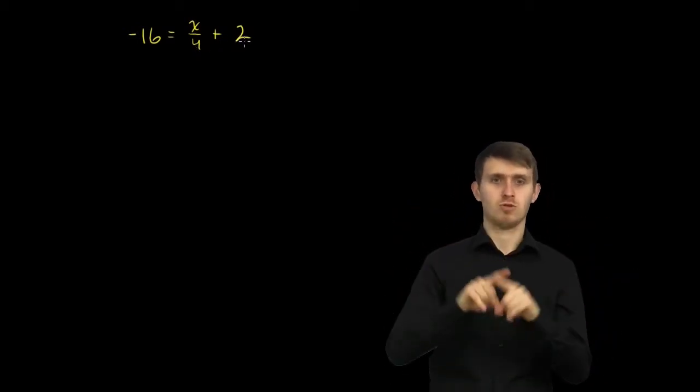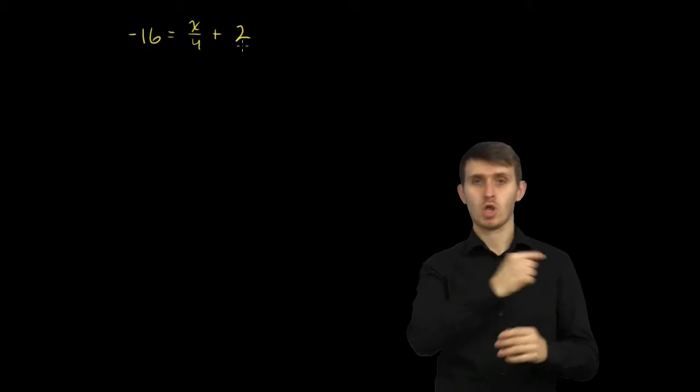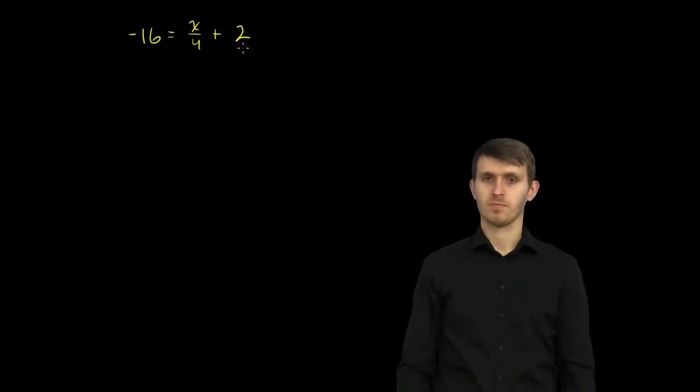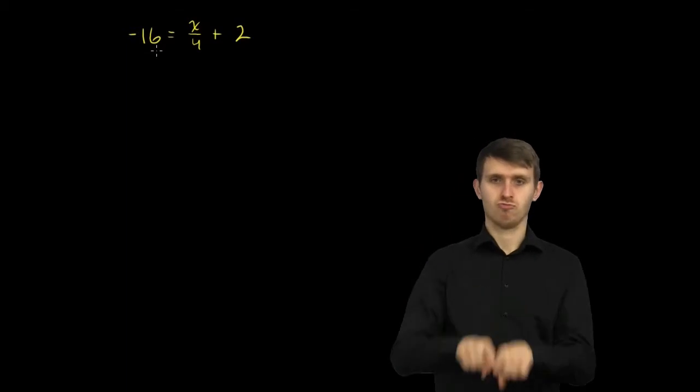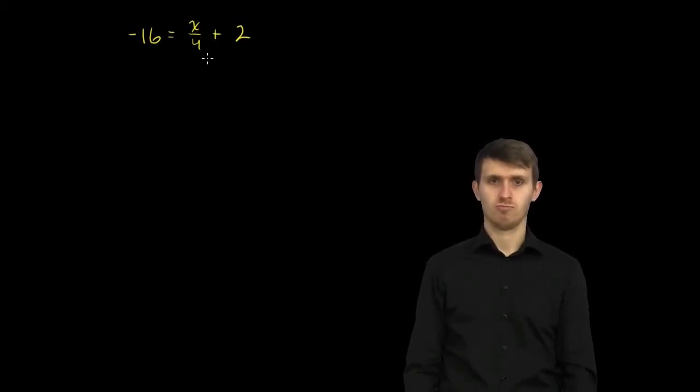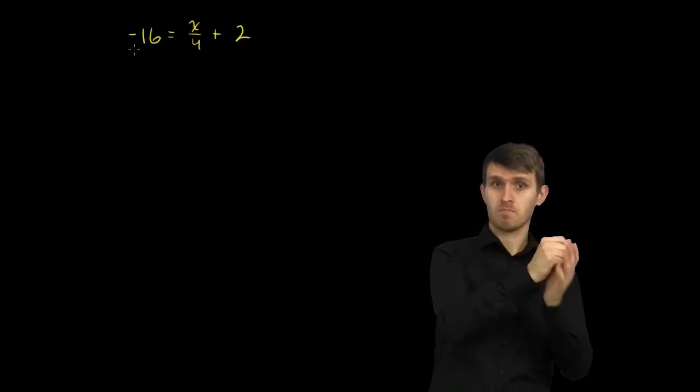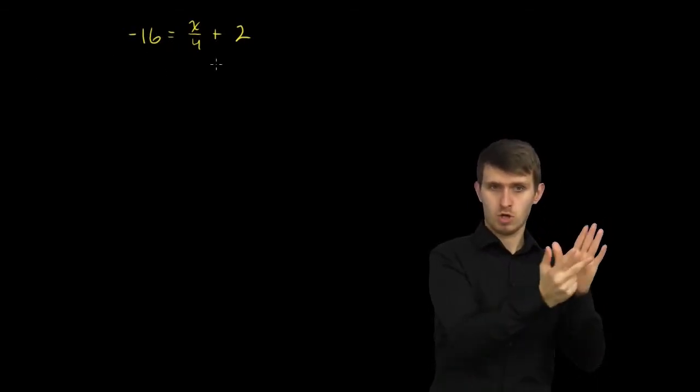So in order to do that, let's get rid of this 2. And the best way to get rid of that 2 is to subtract it. But if we want to subtract it from the right-hand side, we also have to subtract it from the left-hand side. Because this is an equation. If this is equal to that, anything we do to that, we also have to do to this.